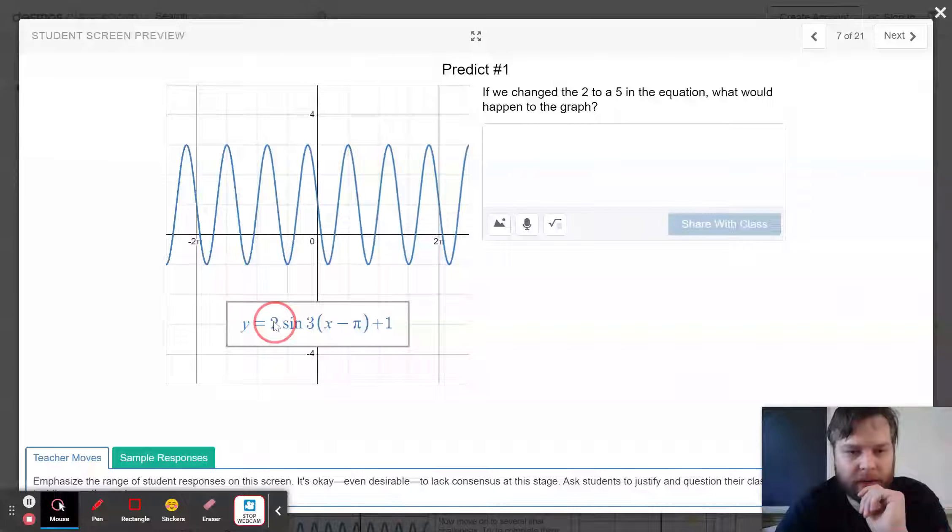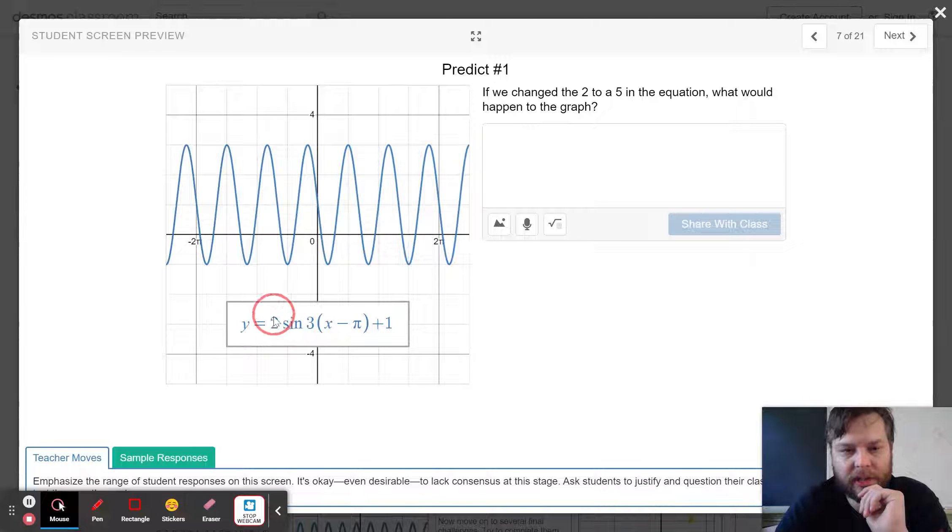Changing the 2 to a 5 here would make it taller. 2 is the amplitude. Changing it to a 5 would make it that much taller. Instead of going two steps above the midline, it goes five steps above the midline.